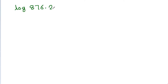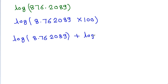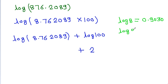If we have to find the value of log 876.2089, we write it as log 8.762089 plus log 100. Log 100 is 2. For log 8.76, we know log 8 is 0.9030 and log 9 is 0.9542. Since 8.76 is close to 9, log 8.76 ≈ 0.94. So the value is approximately 2.94.